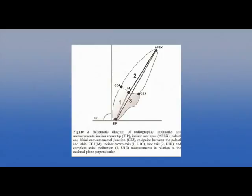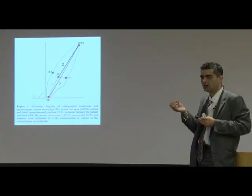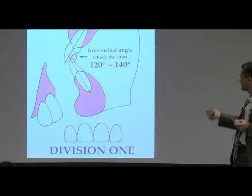We measure the angle of the upper incisor for a number of reasons. The term torque — T-O-R-Q-U-E — is basically another name for the inclination of the incisor. An under-torqued incisor is what we call division 2. A proclined incisor is what we call division 3.